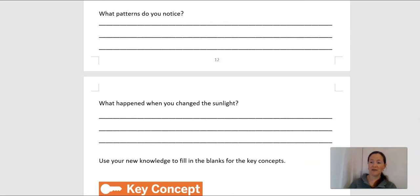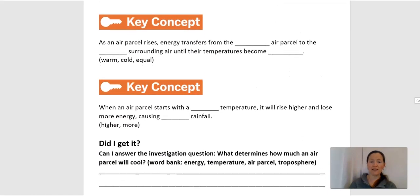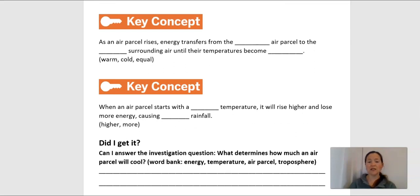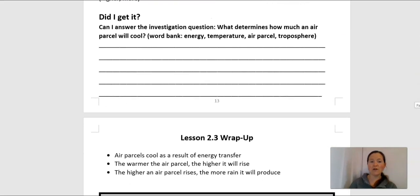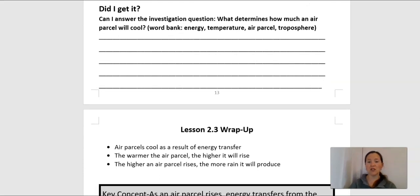Now let's look at our key concepts. As an air parcel rises, energy transfers from the blank air parcel to the surrounding air until the temperatures become blank. When an air parcel starts with a blank temperature, it will rise higher and lose more energy, causing blank rainfall. Your challenge is: did you figure out more information to help answer the investigation question — what determines how much an air parcel will cool? Here's your word bank: energy, temperature, air parcel, and troposphere.